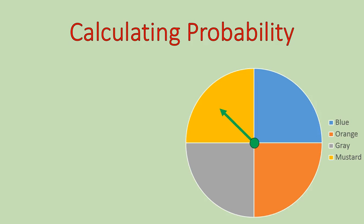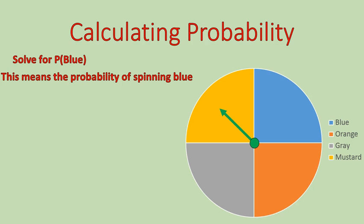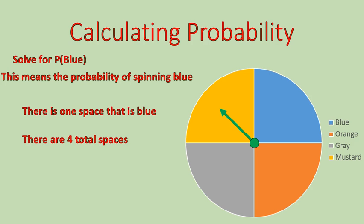Let's calculate some probability. Here's a spinning spinner with a green arrow — imagine flicking it with your finger and it spins all around. I'm solving for the probability of blue, written as P(blue), meaning the probability of spinning blue. If all the parts are equal, there is one space that is blue and four total spaces, so the probability of spinning blue is one out of four.